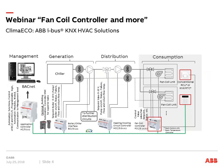A more technical view of the whole KlimaEcho solution: the consumption/room part on the right side covers the three products we are talking about today. The distribution part includes the heating/cooling circuit controller, the generation part includes the boiler and chiller interface, and the management part includes our application controller. In the middle, optional, are the building automation controllers. All these things will be covered in later webinars.